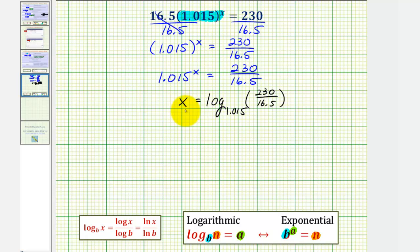But our homework asks us to round this to three decimal places, so now we'll convert this to a decimal using the change of base formula given here, and we're going to use common logs. So we can say x is equal to the common log of the number, which is the quotient, divided by the common log of the base, which is 1.015.